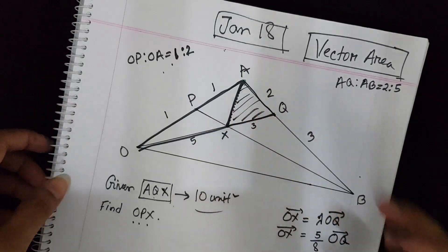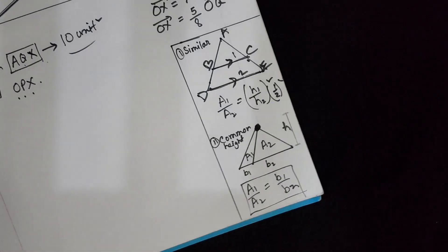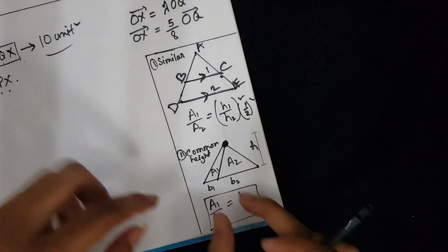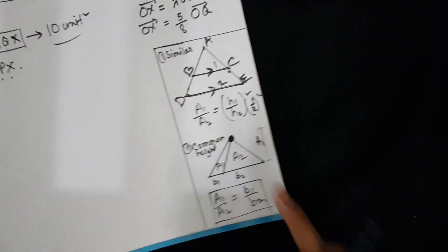These two triangles can be compared to type 2 triangles. That is, the area ratio will be equal to the base ratio.